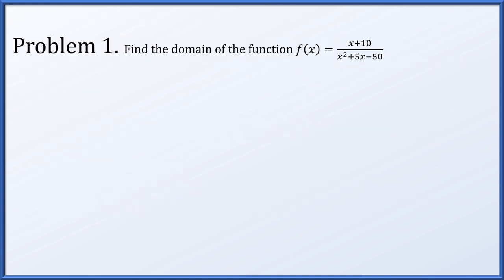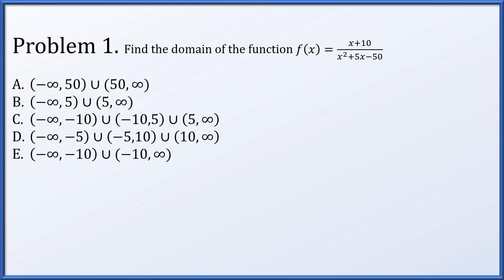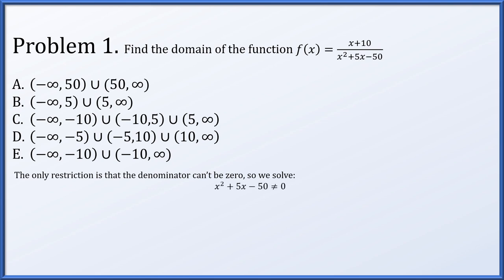For problem one, we're going to find the domain of the function f(x) equals x plus 10 over x squared plus 5x minus 50, and we're given five options to choose from. For a rational function — one polynomial over another — the only restriction is that the denominator cannot be zero. So we solve that x squared plus 5x minus 50 is not equal to zero.